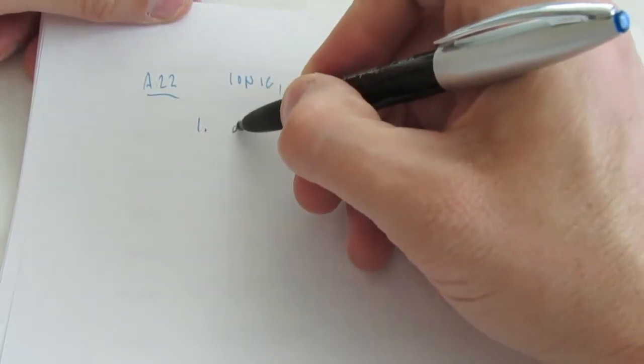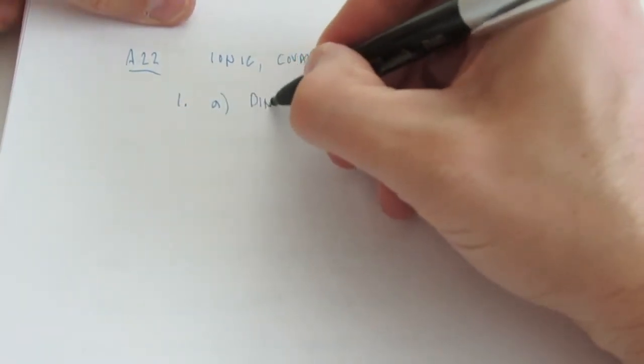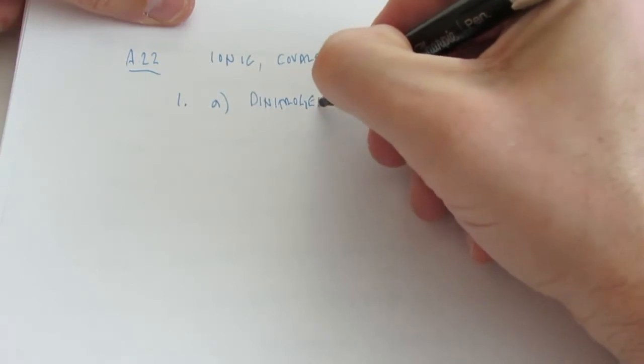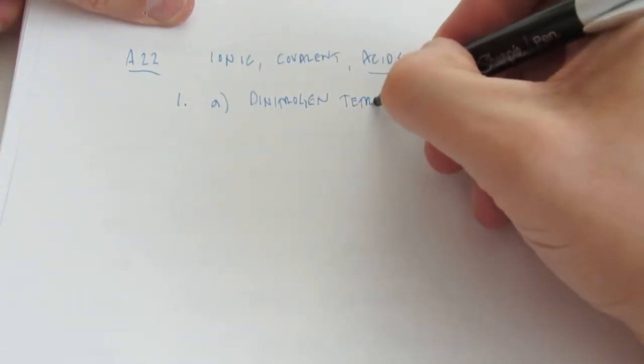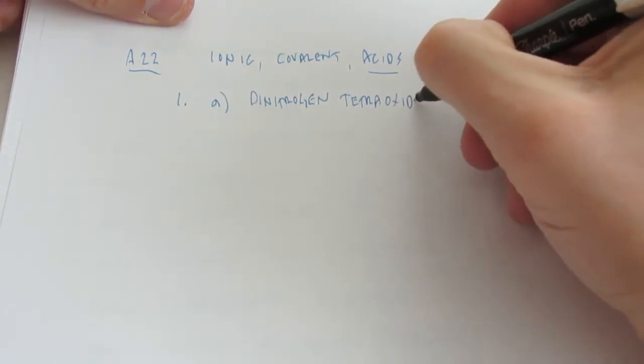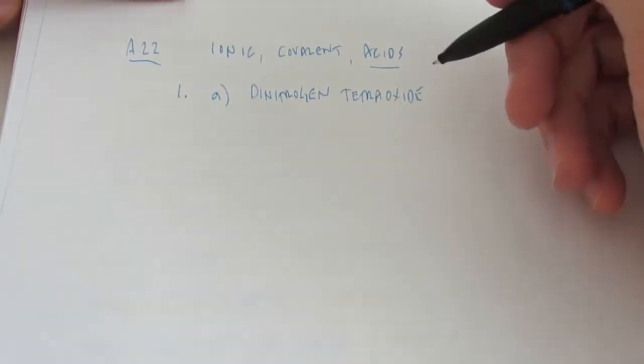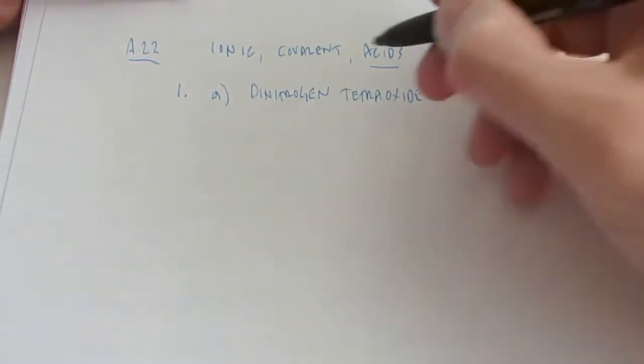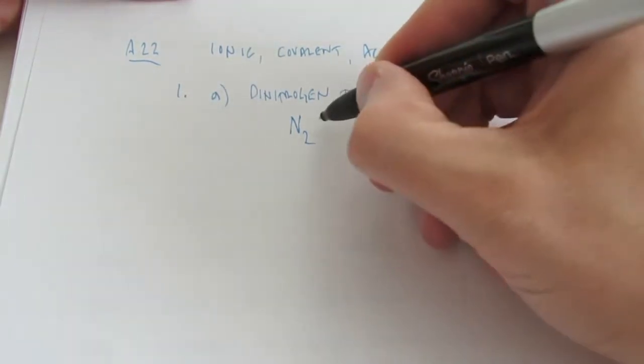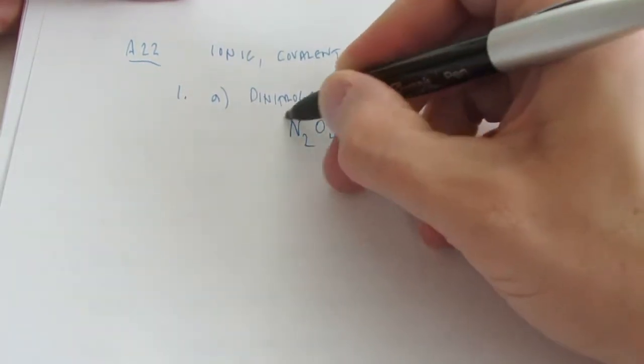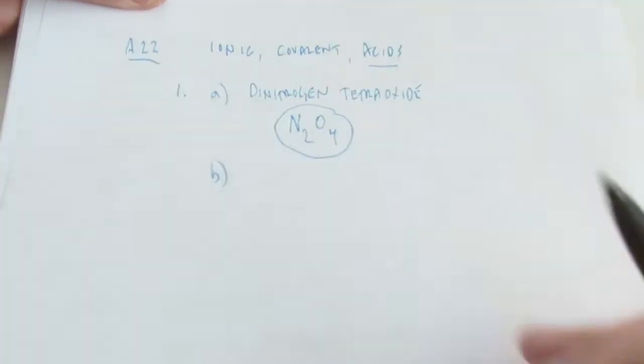So, let's take a look at assignment 22, number 1, letter A. Now, this gives me this name, dinitrogen tetraoxide. Now, you guys should recognize we've used a lot of prefixes there. So, this must be obviously a non-metal bonded to a non-metal. Dinitrogen N2 tetraoxide O4. If you wrote down N2O4, good for you.